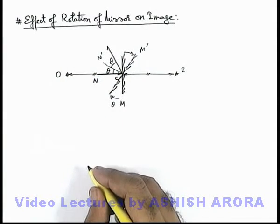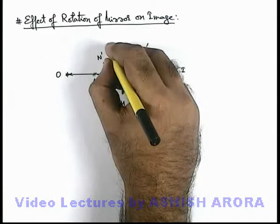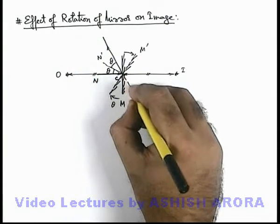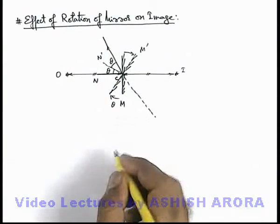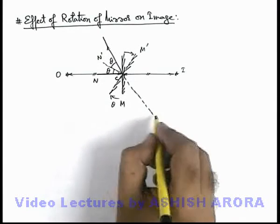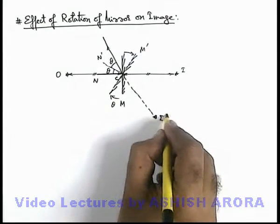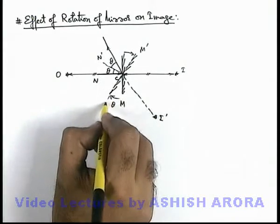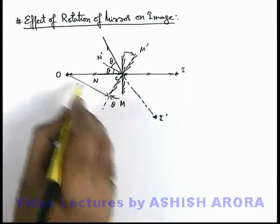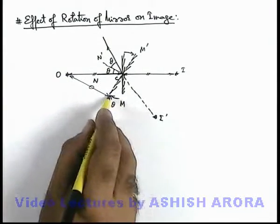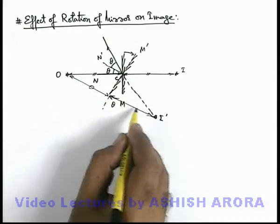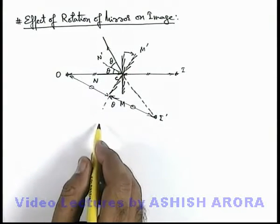In this situation, this light ray will be producing the image of the object behind the mirror. The new position of image I prime will be located at the same perpendicular distance behind the mirror at which the object is located, with respect to the new position of the mirror.